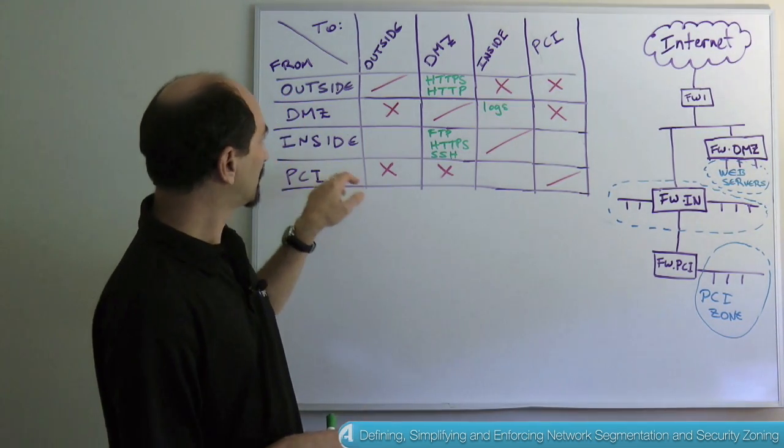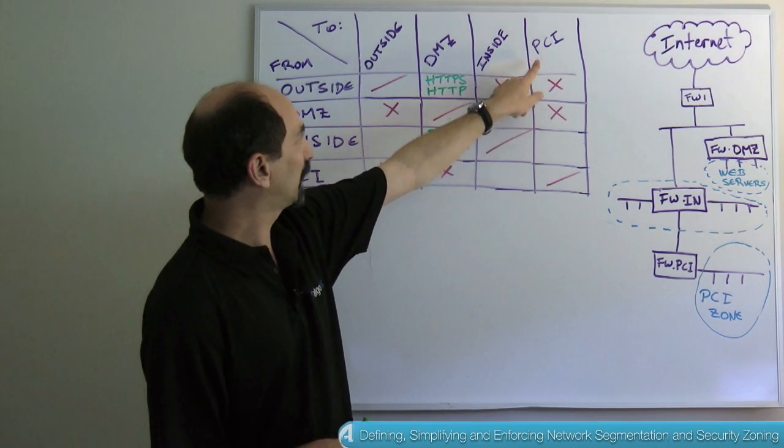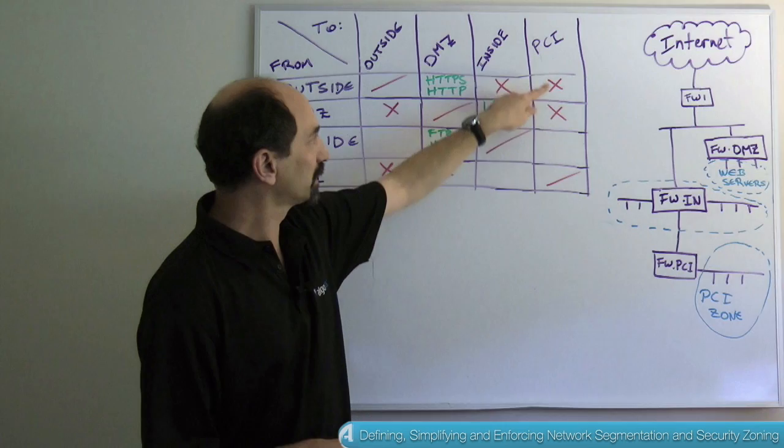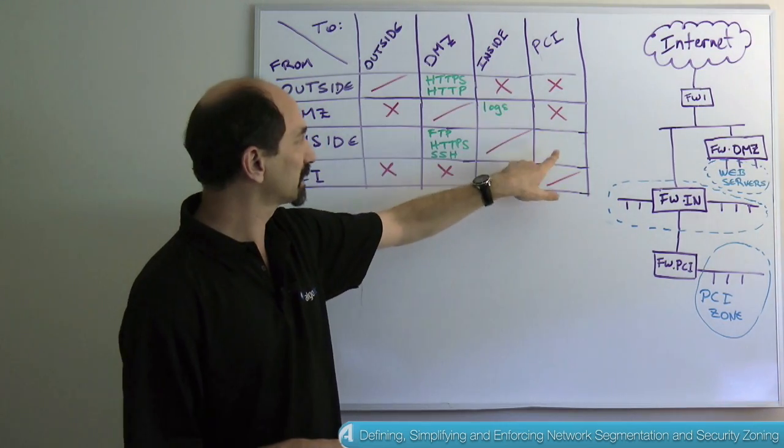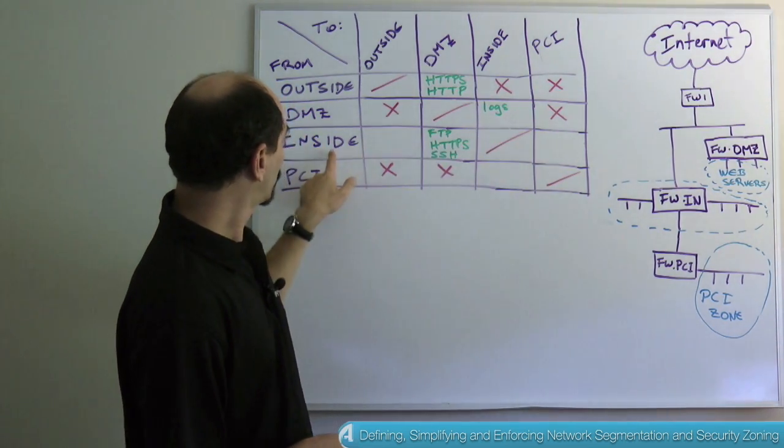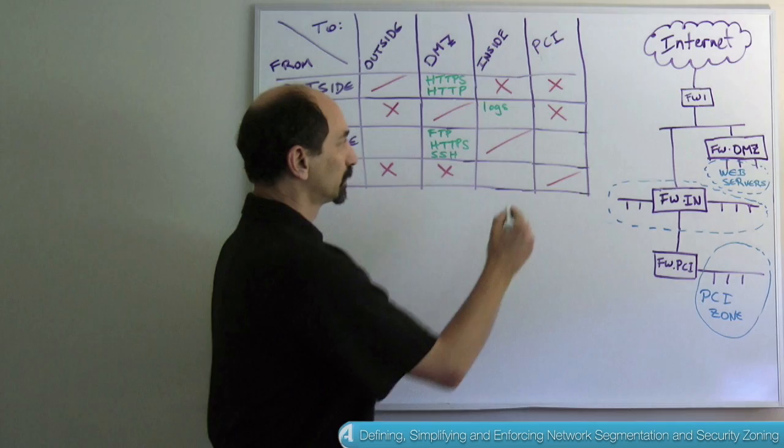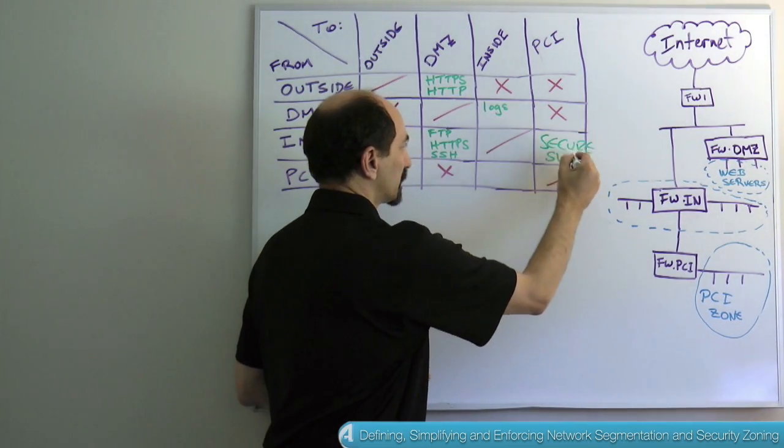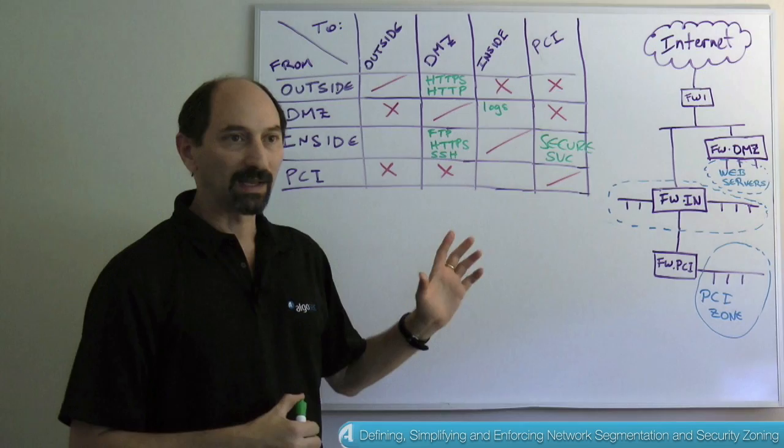Conversely, for the PCI zone, you only want to allow traffic into the PCI zone just from the inside network from nowhere else. So you have these red Xs everywhere else. And in the cell for traffic from the inside to the PCI, you would list the secure services that you want to allow by default.